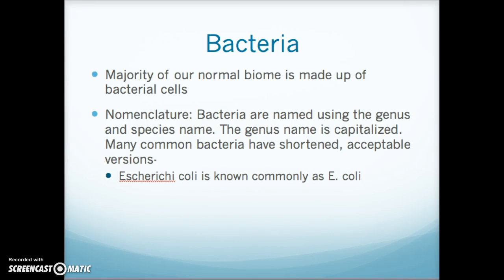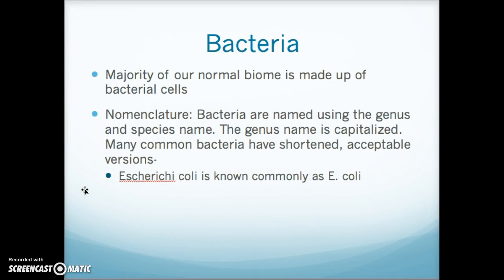Bacteria are named using the genus and species name. The first name is the genus name and it's always capitalized, and the second name is always lowercase and is the species. For example, this is Escherichia coli, commonly known as E. coli. Don't worry about pronunciation — you'll get more familiar with bacterial names as we go along and be able to recognize ones more commonly found in our normal biome.